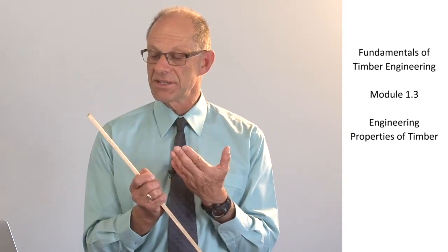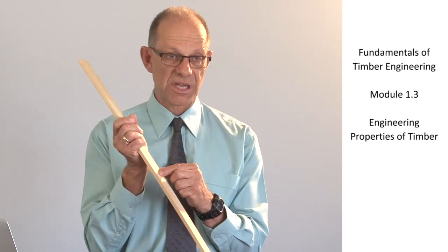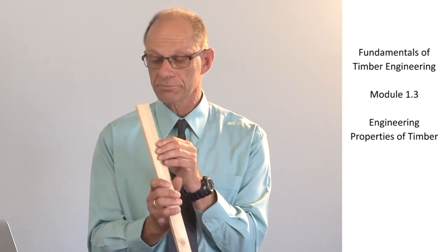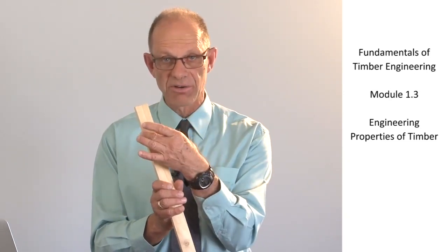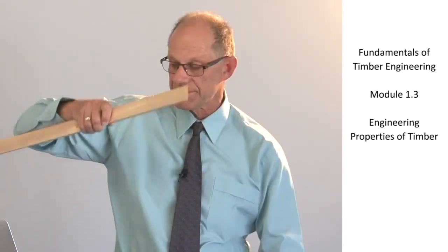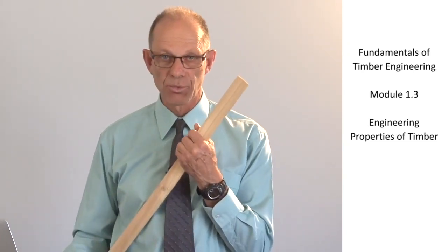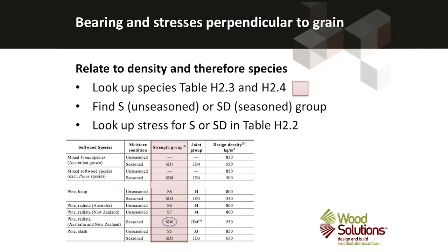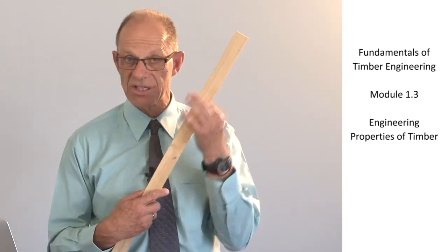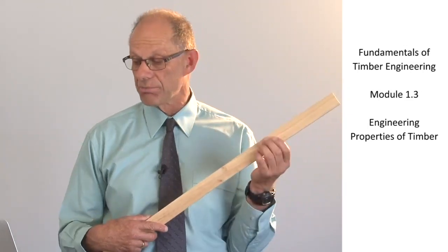Some properties are not a function of characteristics like knots in individual pieces — they are only related to the character of the wood fibre itself. Primarily, bearing strengths — the strength where pieces of timber sit on top of a hard bearing surface — are a function of the wood species. We look up a table in the standard that relates each species to a strength group, then look up another table to find the bearing strengths directly. So some properties are given by the stress grade, others are dictated by the species. For the MGP grades, which are essentially structural softwood grades, both can be found by looking up the same table.